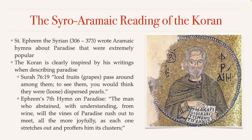For further evidence, we look at St. Ephraim the Syrian, who lived from 306 to 373. He wrote famous Aramaic hymns about paradise, which spawned an entire genre. These paradise hymns became very popular and were translated into Greek and Armenian even during his lifetime, and later into many other languages. The Quran is clearly inspired by his writings when describing paradise — there are many parallels. For example, in the very next sentence after the verse we looked at, the Huris are described as if they were pearls still in their shells, which sounds straight from St. Ephraim.